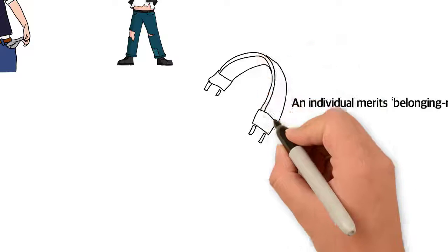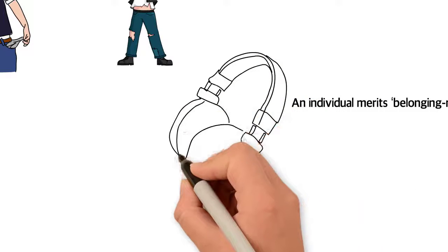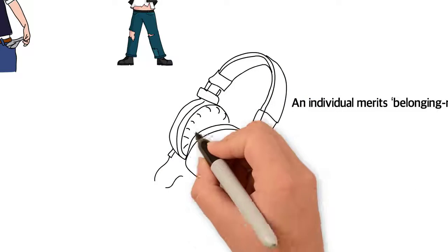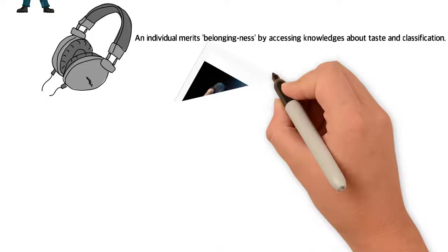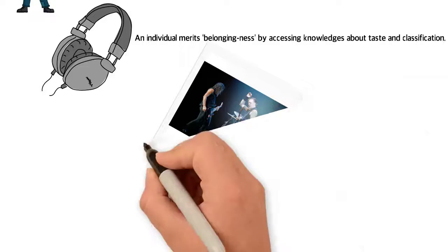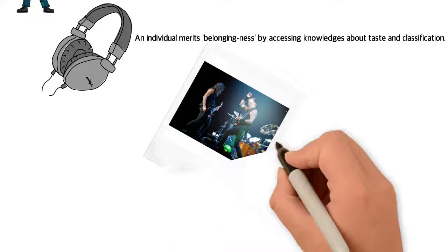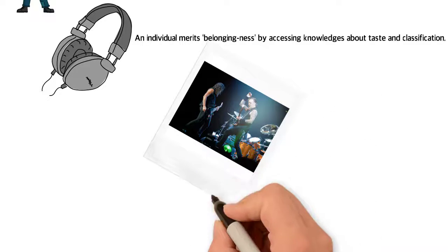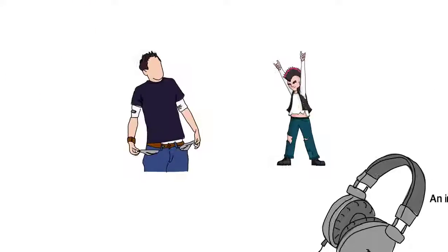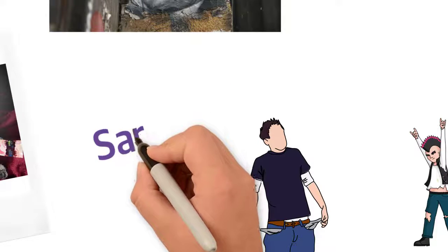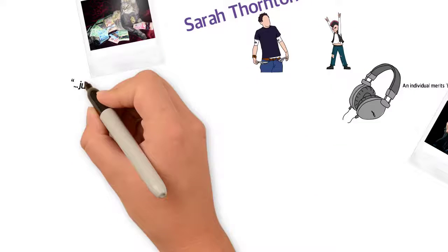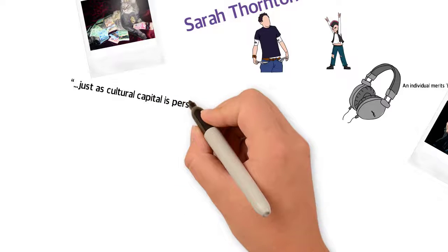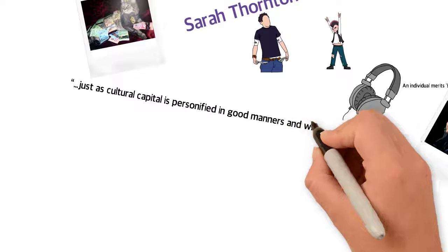An individual merits belongingness by accessing knowledges about taste and classification. For example, when a metal fan goes to a metal gig, they are less likely to wear a Justin Bieber t-shirt, as they would, say, a Metallica t-shirt, because one suggests membership to the taste community and the other does not. In Sarah Thornton's adaptation of Bourdieu's work, she offers the analogy that just as cultural capital is personified in good manners and witty conversation, so subcultural capital is embodied in the form of being in the know.